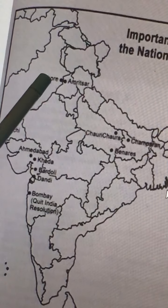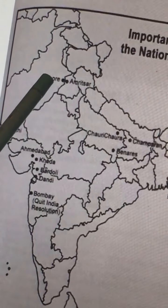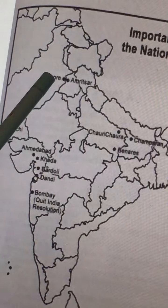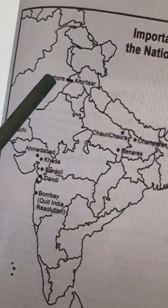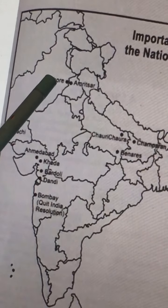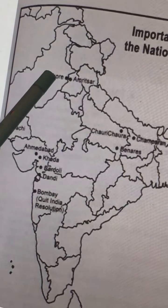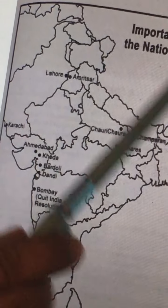Then Lahore. Lahore is located in Pakistan, where the Indian National Congress session was held in the year 1929, led by Jawaharlal Nehru. This is a very important place in the context of the nationalist movement.